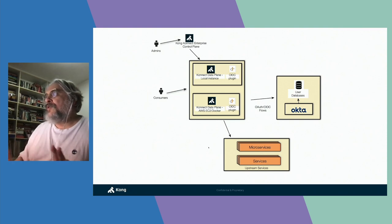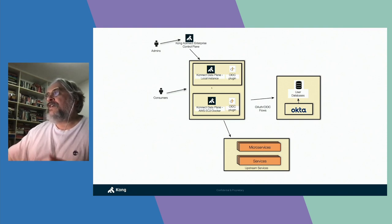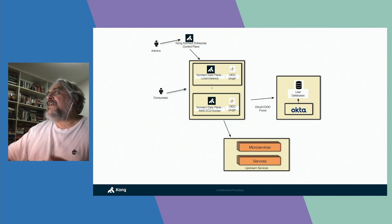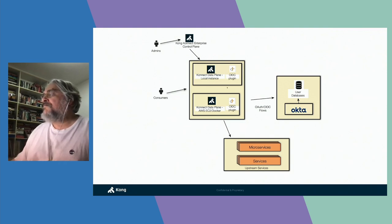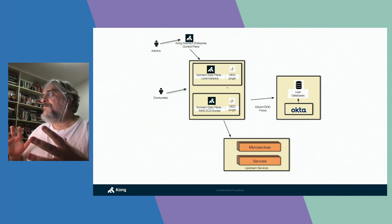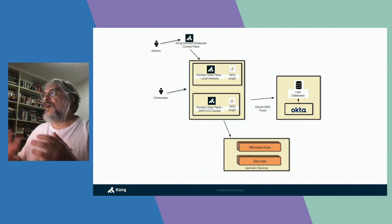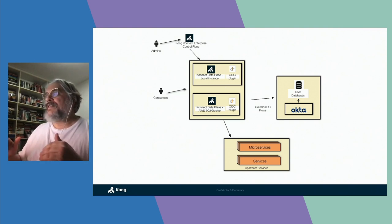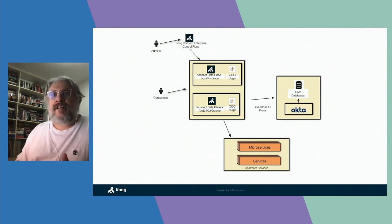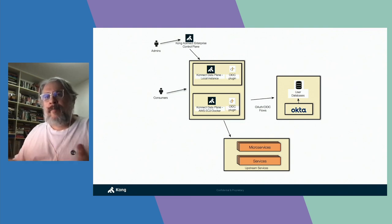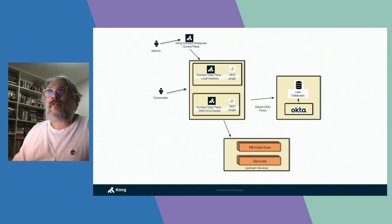The topology is pretty straightforward, but security is one of the most important policies you should enable for your APIs. In this sense, you're going to have a loosely coupled integration with Okta provider to implement OpenID Connect-based authentication processes. Both products — Kong and Okta — fully implement the OpenID Connect standard, all the grants.